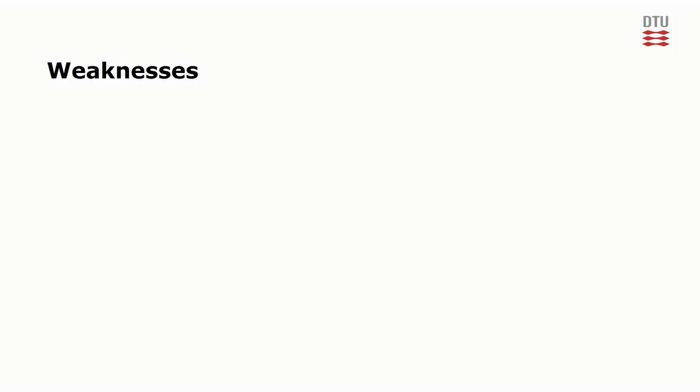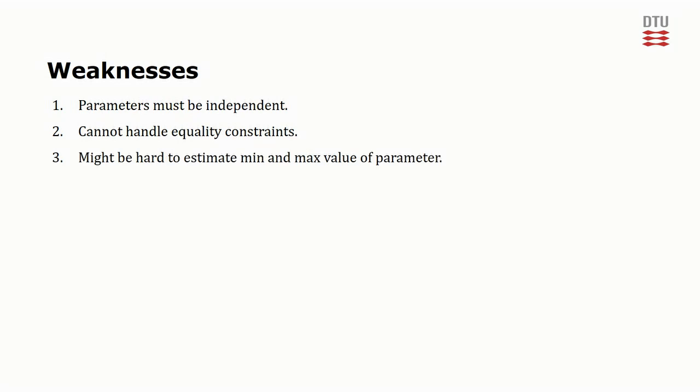Robust optimization has a number of weaknesses, some of which we have mentioned before. First of all, the parameters must be independent. Secondly, the method cannot handle equality constraints. Thirdly, it might be hard to estimate the minimum and maximum value of a parameter.